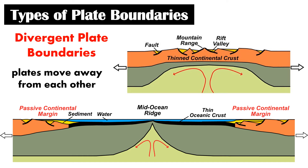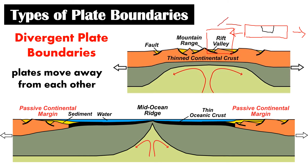The first type of plate boundary is divergent plate boundaries. If two plates move away from each other, then you can call it a divergent plate boundary. The resulting landform differs depending on whether you are on an oceanic or continental plate. If on a continental plate, a rift valley may form — the land is stretched out due to tension, and a valley forms as it is pulled apart. If it is in the ocean, you will get mid-ocean ridges.